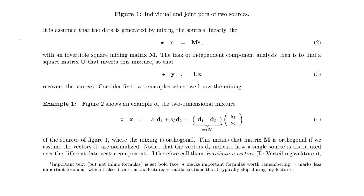After having looked at what it means that two variables are statistically independent, we can now look more at the mixing and unmixing process. This equation formalizes the mixing process that is assumed to have taken place. We get the data x, a two-dimensional vector like s. s contains the statistically independent variables s1 and s2, x contains the mixture x1 and x2, and M is a two-by-two mixing matrix.